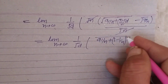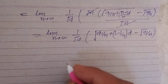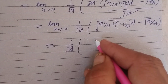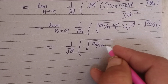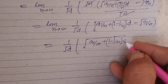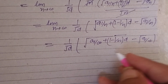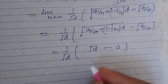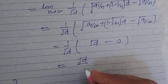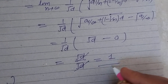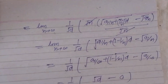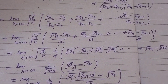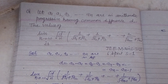Now applying the limit: 1 over root d times root(A1 upon n plus (1 minus 1 over n) times d) minus root A1 upon n. As n tends to infinity, A1 over n tends to 0 and 1 over n tends to 0, so this becomes 1 over root d times root d, which equals 1. So the final answer of this question is 1. I hope you got it — please like the video, subscribe to the channel, thanks for watching.